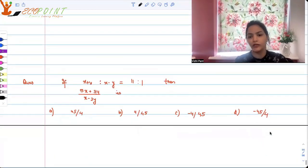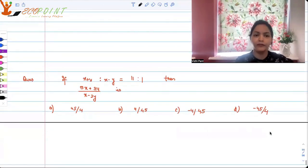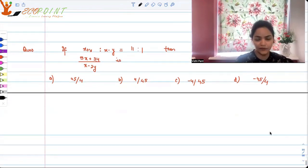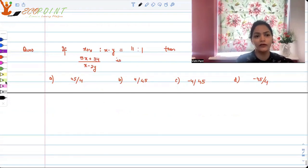Let's work on another question of similar type. So suppose we are given that the ratio of x plus y and x minus y is equal to 11 upon 1. Then we have to find out what would be 5x plus 3y upon x minus 2y. Let's find out. So how can we work in this question, let me use something specific here. These are the options given to you.